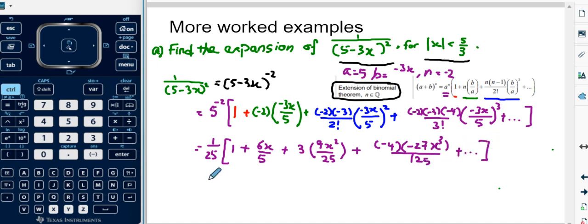So simplify further. I will have 1 over 25 bracket, 1 plus 6x over 5 plus 27 x squared over 25, and then minus times minus is plus.